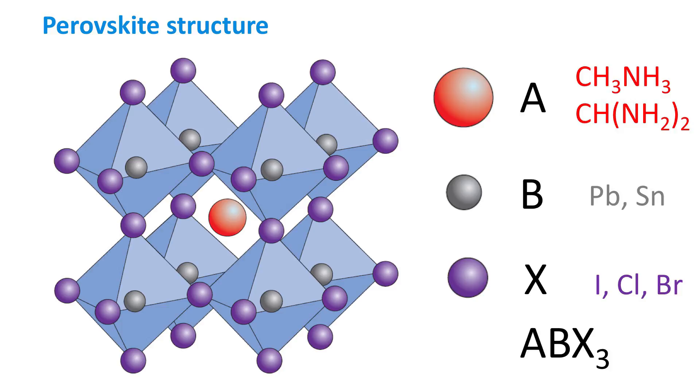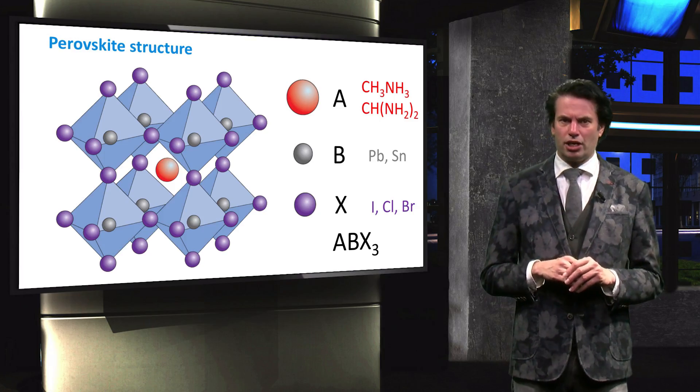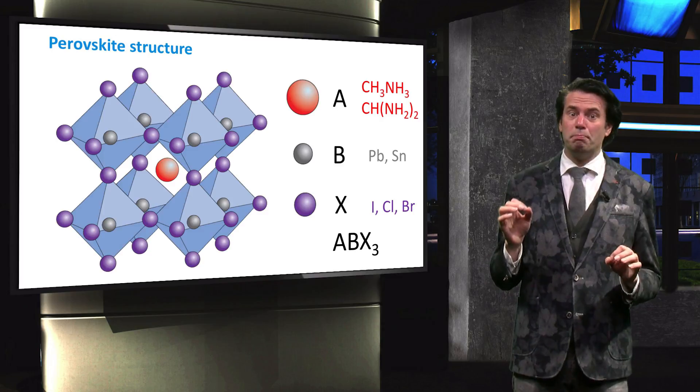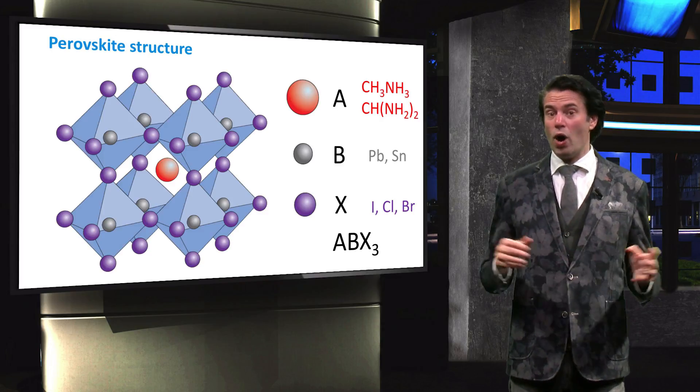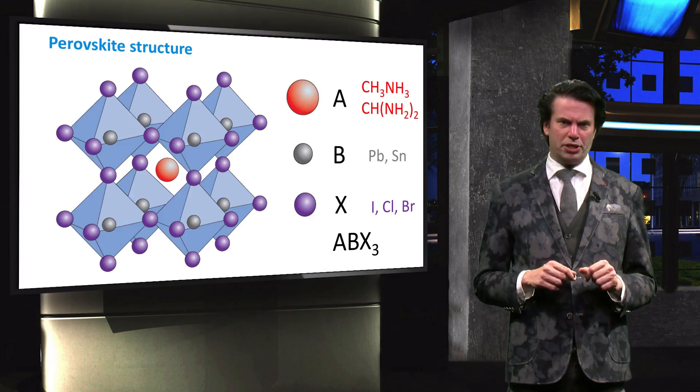X is a halogen, such as iodine, chlorine, or bromide. Often these mixed halide materials are used. The cation B usually contains lead, while tin can also be used.